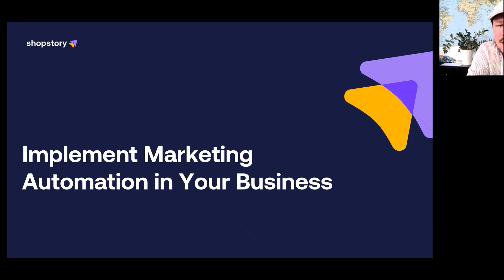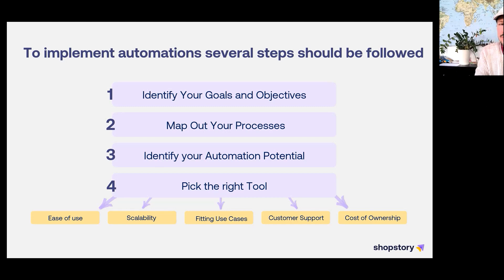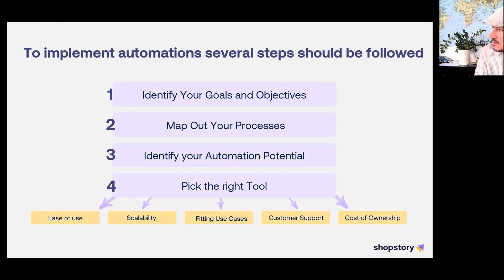How would you actually start your marketing automation? Before going into your business and just buying a random tool, you should identify the goals and objectives you're trying to achieve. You should also start mapping out your processes — this is really important. We always try to find out what workflows in your daily business you actually want to automate and whether it makes sense to automate them. It's crucial to identify the automation potential of your business first.